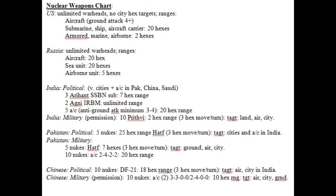Russia has unlimited warheads and can blow up cities. They have a 20-hex range for aircraft and ships, and a 5-hex range for their airborne unit because the Russians have much better theater missiles than the US.